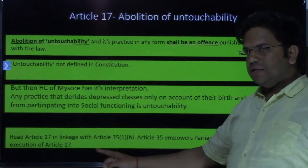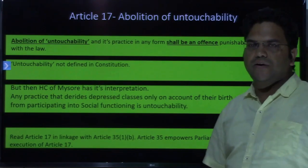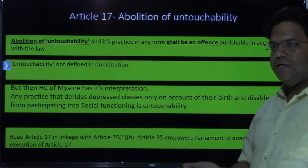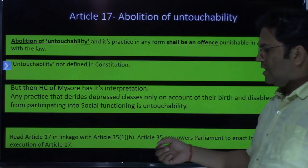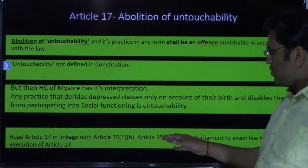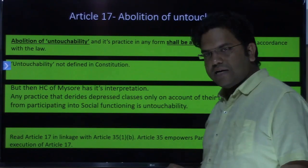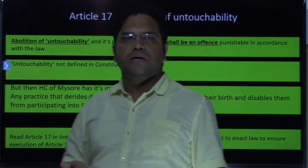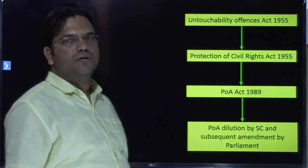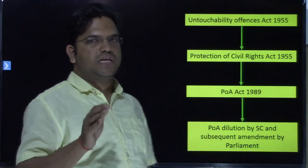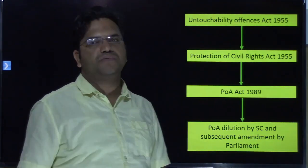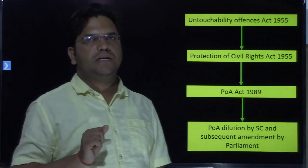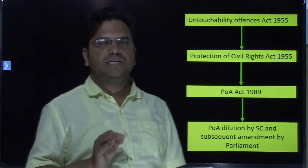Whenever you are reading Article 17, you should read it in tandem with Article 35. Similarly, when you read Article 23 and Article 24, the separate laws required there will also be made by Parliament in exercise of Article 35. In exercise of Article 35, Parliament has created certain laws. The first law was the Untouchability Offenses Act 1955; thereafter its scope was broadened and provisions made more stringent, and you see the Protection of Civil Rights Act 1955 come in. Thereafter, in 1989, the Prevention of Atrocities Act 1989 was enacted.